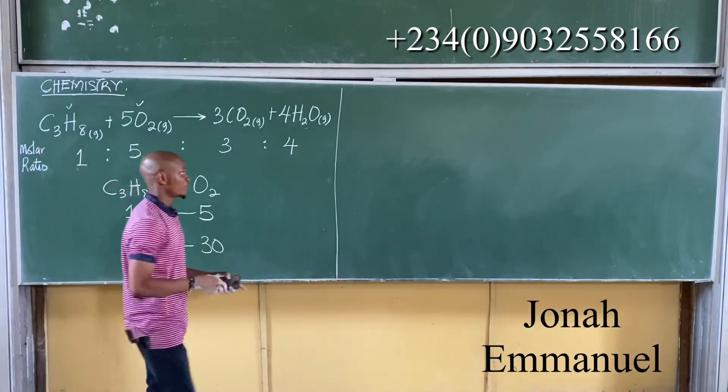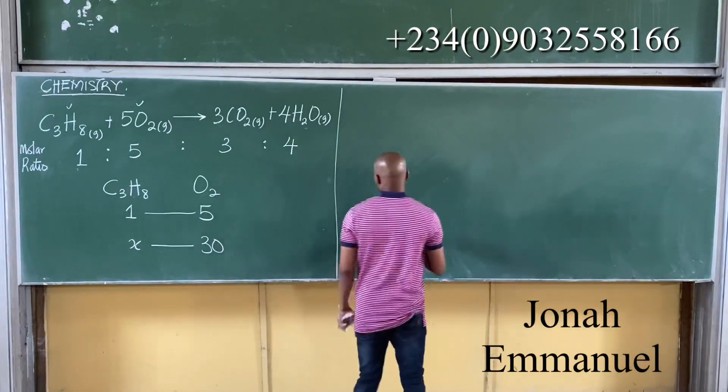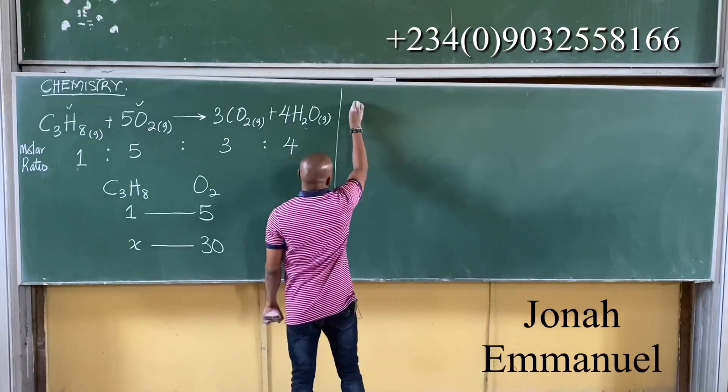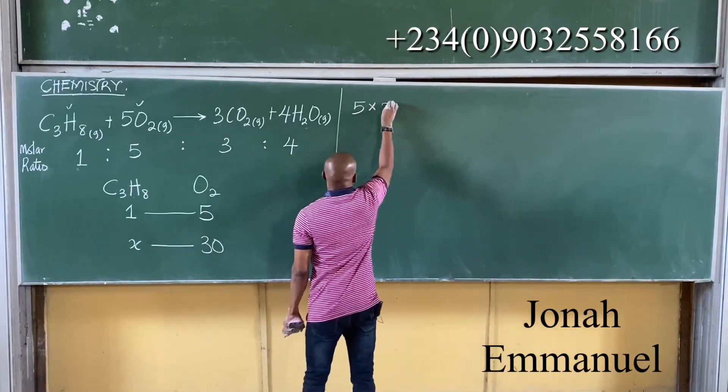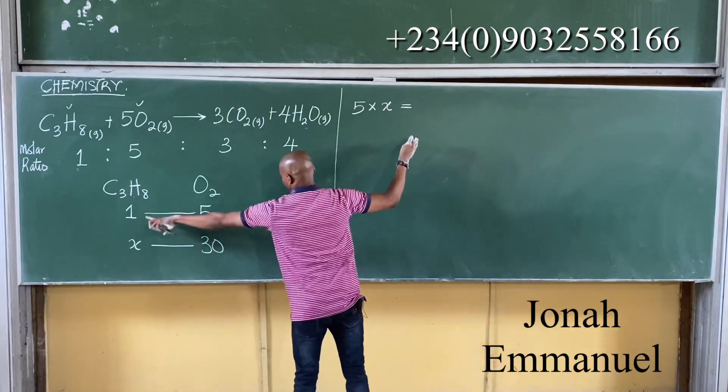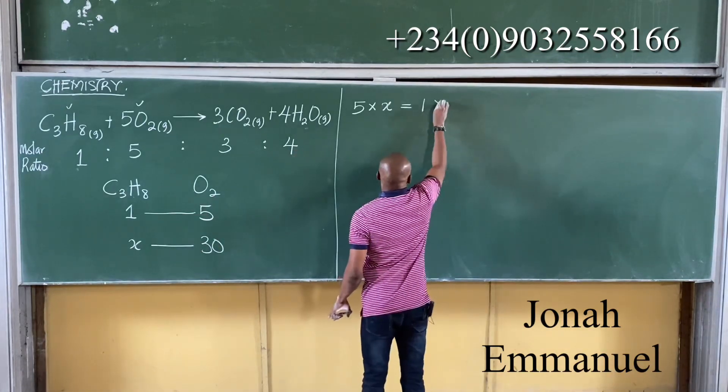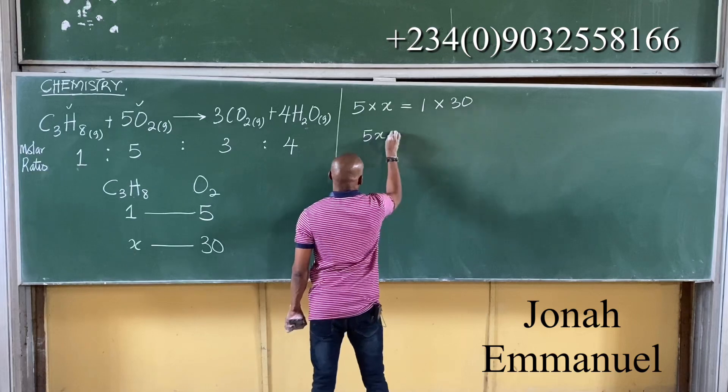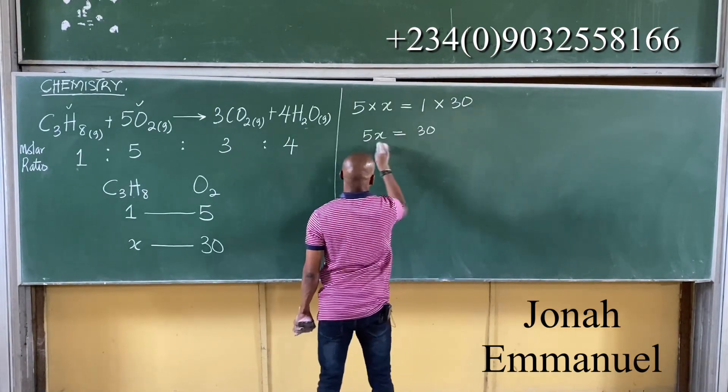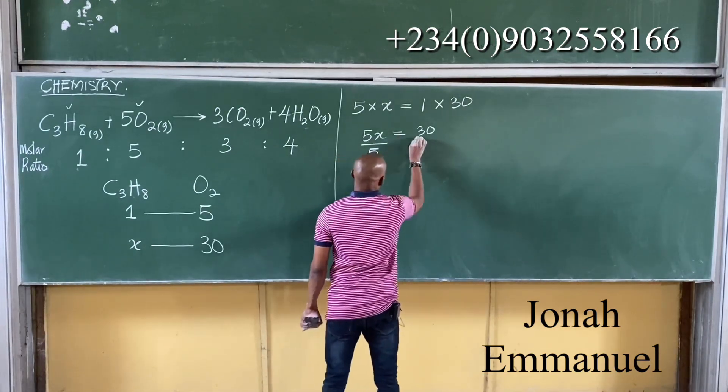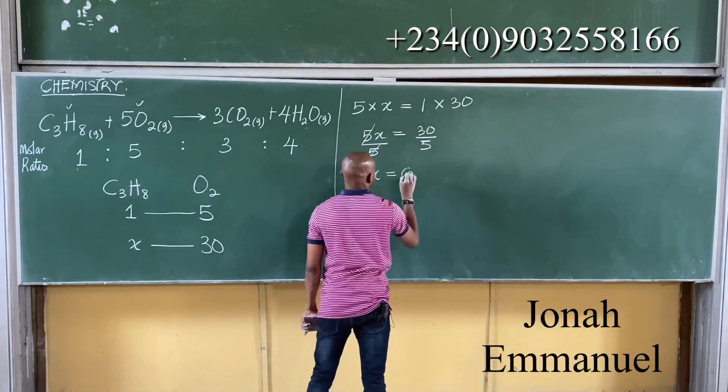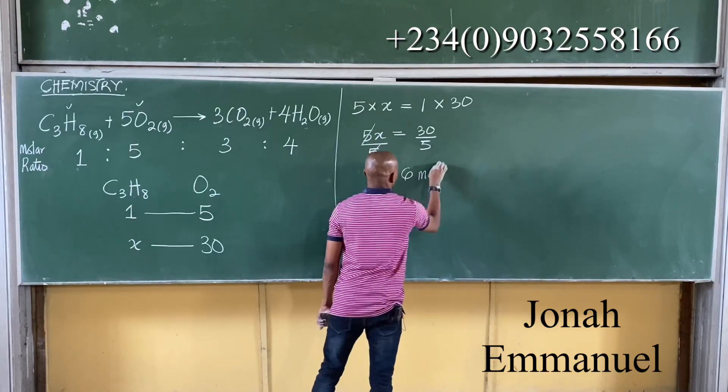From here, we cross-multiply. If I cross-multiply, it becomes this times this. So 5 times X is equal to 1 times 30. So I have 5X is equal to 30. X equals 30 divided by 5. Divide by 5. So X is equal to 6 moles.